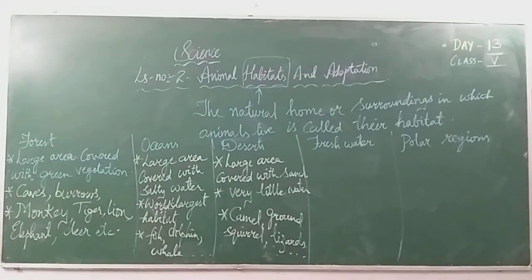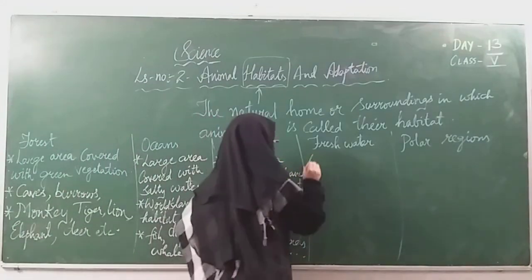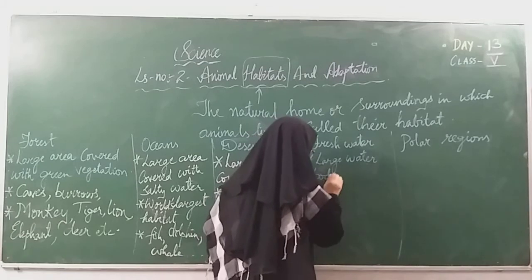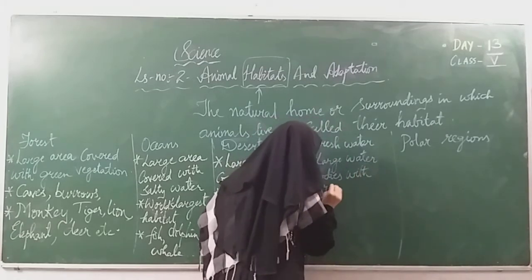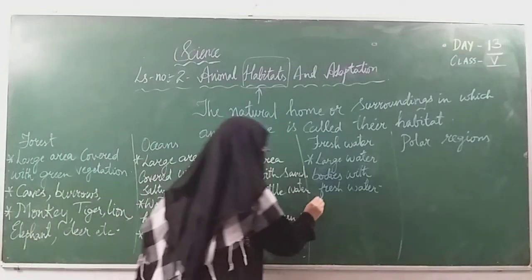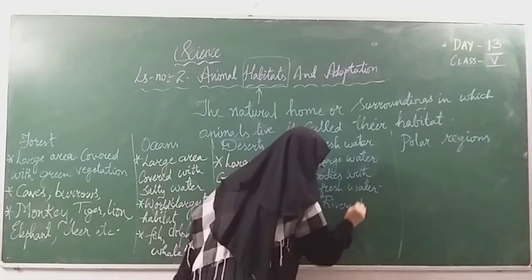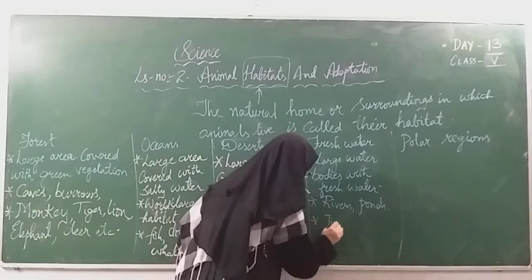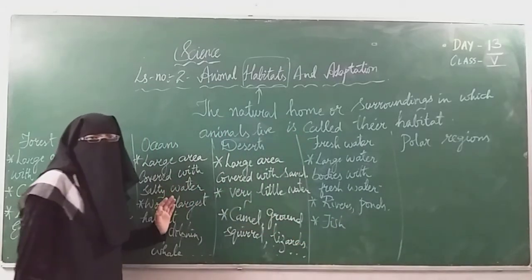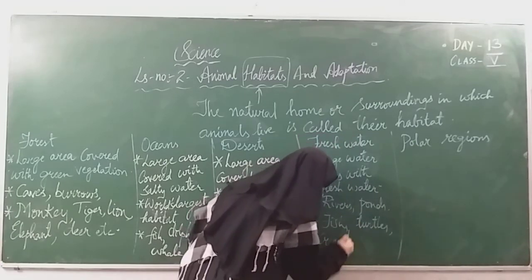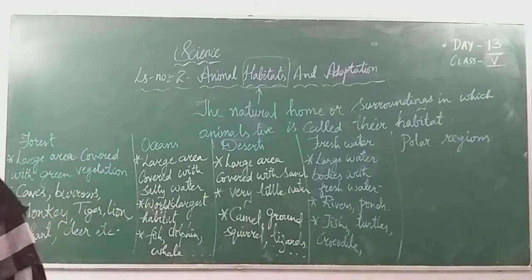Freshwater bodies include rivers, ponds, and lakes. These are large water bodies with fresh water, unlike oceans which have salty water. Animals such as fish, frogs, crocodiles, ducks, and swans live in freshwater. Some fish survive in freshwater while others survive in oceans.